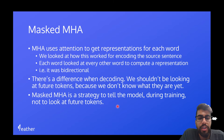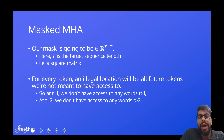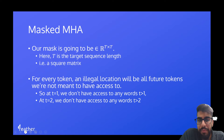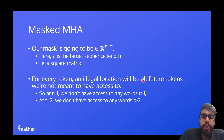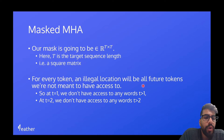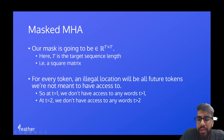We use masking to enforce this. The mask is going to be T by T, where T is the target sequence length — so it's a square matrix. For every token, an illegal location will be all future tokens we're not meant to have access to. At time equals 1, we don't have access to any words greater than T=1, and at T equals 2 we don't have access to words past the second word.